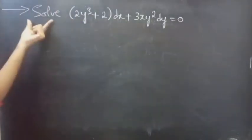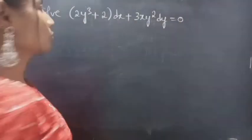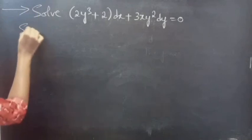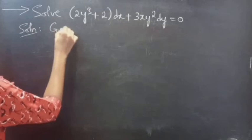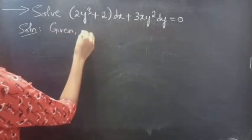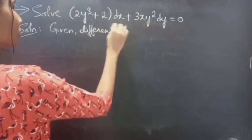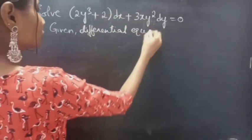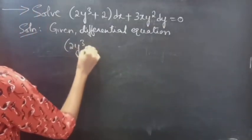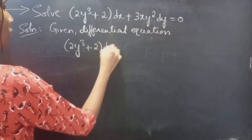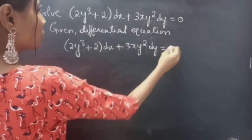Problem. Solve: (2y³ + 2)dx + (3xy²)dy = 0. Solution. Given differential equation: (2y³ + 2)dx + (3xy²)dy = 0.